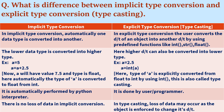In explicit type conversion, consider a value of 2.5. If you want to convert it to an integer, you have to use the int() function and pass 'a' to it. Here 'a' will be converted from float to int — this is called type casting. The new value of 'a' will be 2, whereas it was originally 2.5.